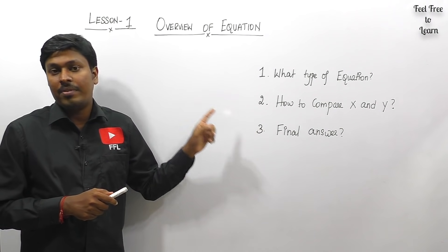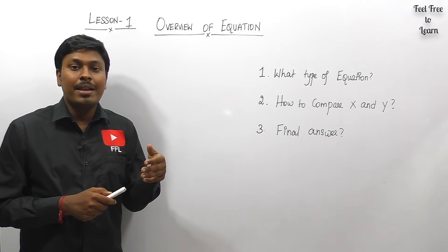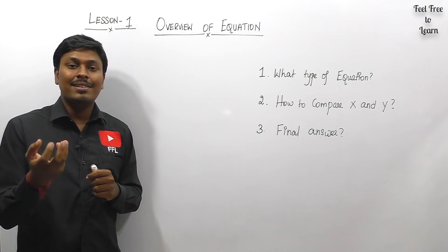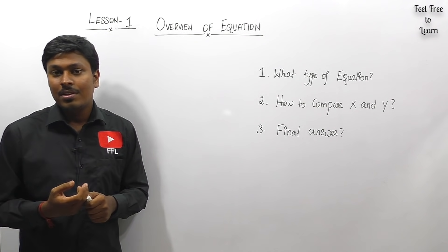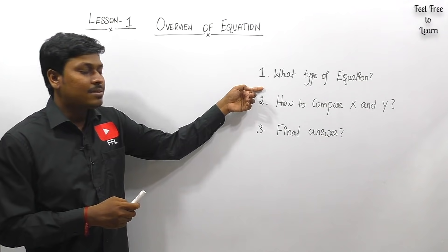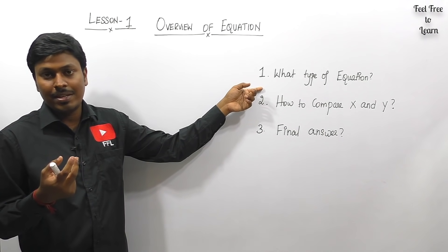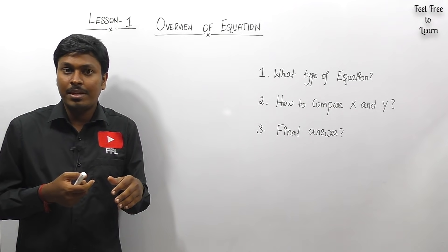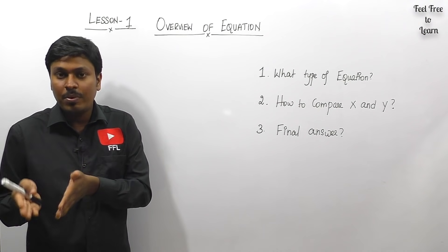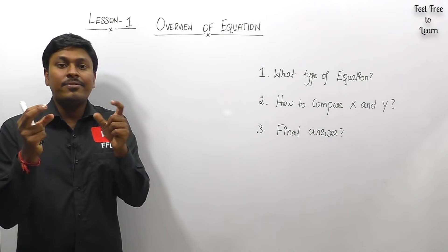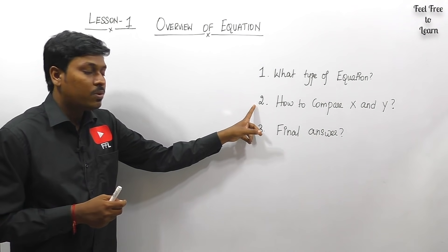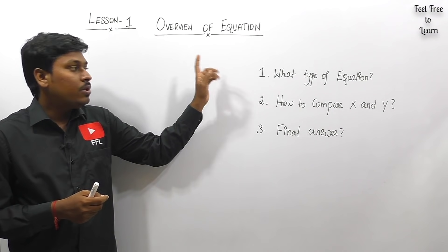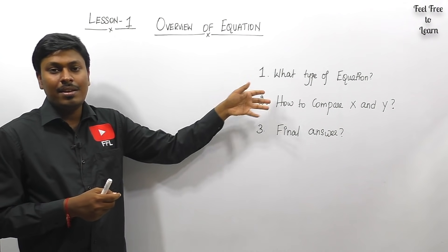After finding the value of x and y, you should know how to compare those values — that is most important. Then step four is to state the final answer, that is the relationship between x and y: whether x is greater than y or x is less than y. In total there are four steps. The second step — finding the value of x and y — differs depending on the type: quadratic equations are solved differently from simultaneous equations.